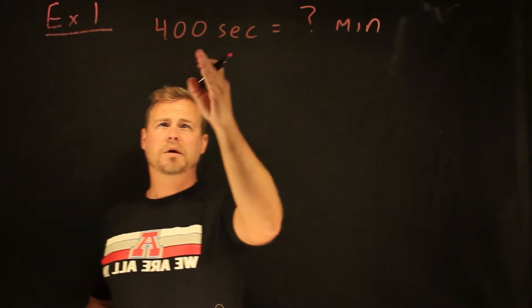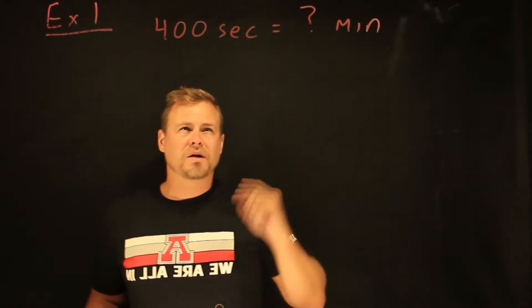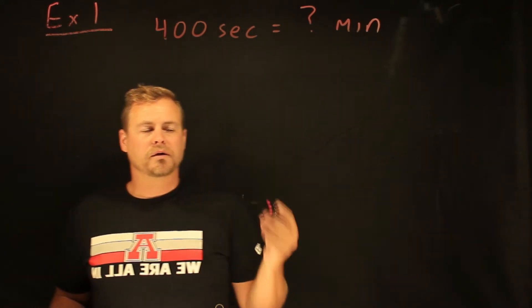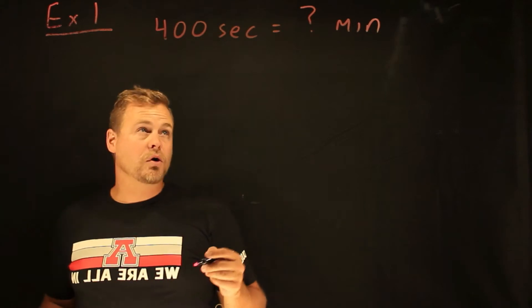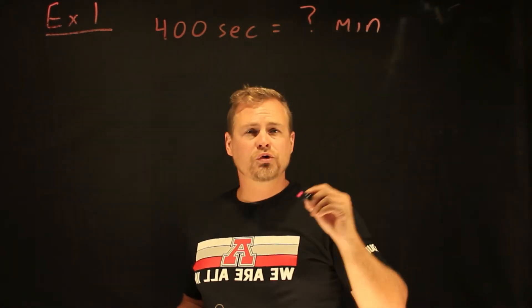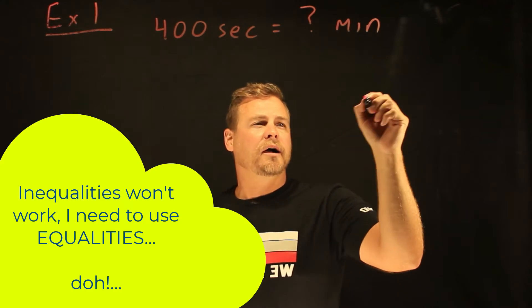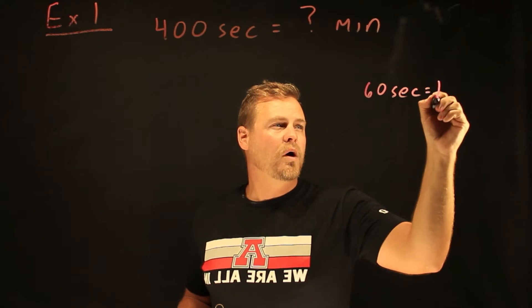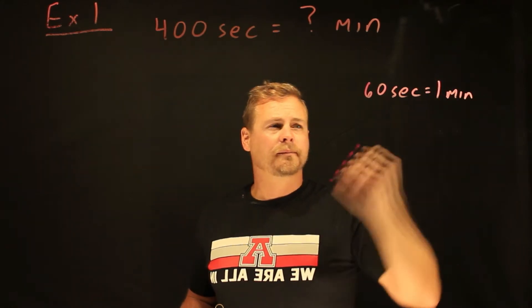So let's say I want to know how many minutes are in 400 seconds. So I collected some data. I have this big number, 400 seconds. It doesn't make a whole lot of sense to me. I want to put it in terms of minutes so I can understand it better. And so I'm dealing with seconds and minutes. And so I have to choose my inequality. And so I know that there are 60 seconds in one minute.